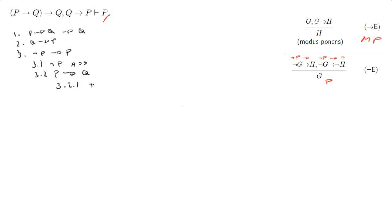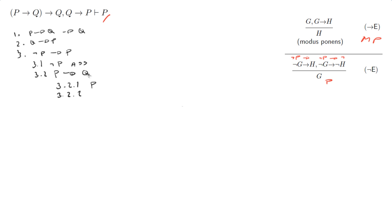So 3.2.1 is going to be P as assumption. Then 3.2.2 — in order to get Q, I need to use negation elimination again: not Q implies something, and not Q implies not something. So I'm going to say not Q implies P, because I've got P, and I've got not P down here. And then at the bottom, not Q implies not P, and then I can get Q out.